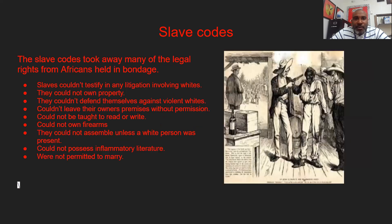The slave codes took away many legal rights that African Americans held. Slaves couldn't testify in any litigation involving whites — they couldn't testify in court against whites. Slaves couldn't own property because they were considered property themselves. They couldn't defend themselves against violence from whites, and they couldn't leave their owners' premises without permission.